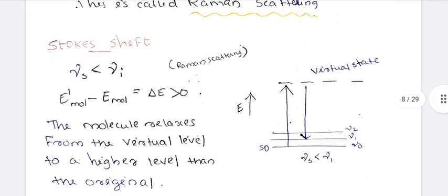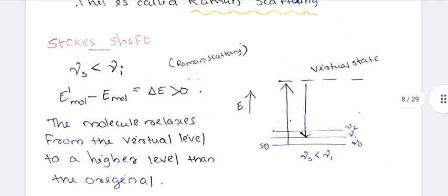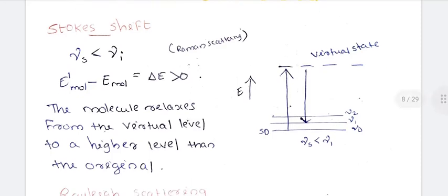In Raman scattering, νs is less than νi — the incident radiation frequency is greater. This is the Stokes shift. The Stokes shift means the molecule relaxes from a virtual level to a higher level than the original, and you will be excited.